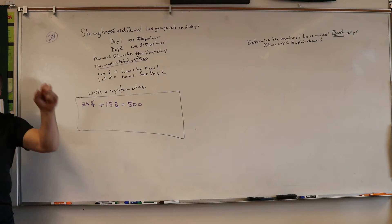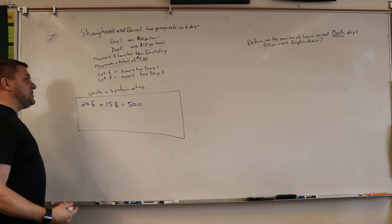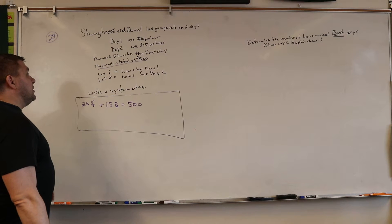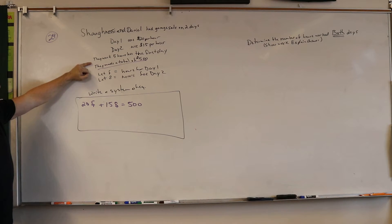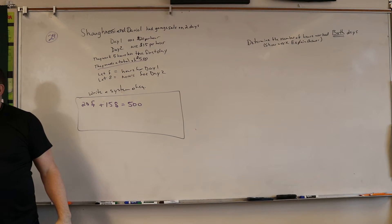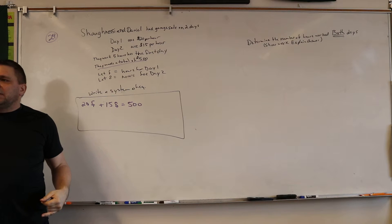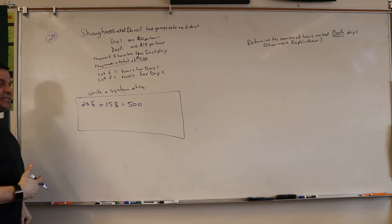So, $20 per hour the first day, plus $15 per hour for the second day, gives us a total of $500. Does that make sense? But I need two equations, and that's only one. So, I need another equation.